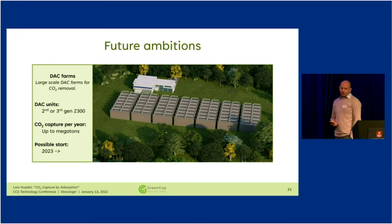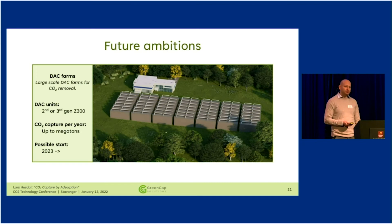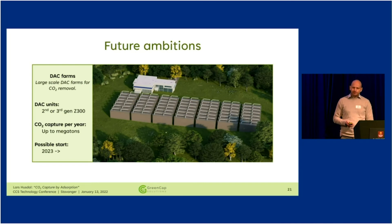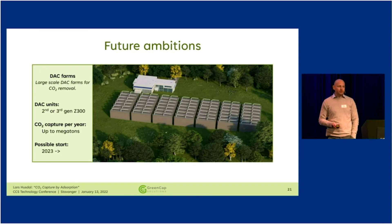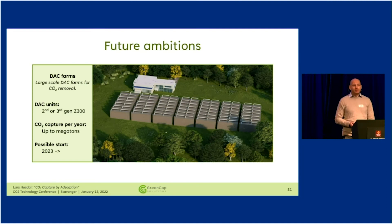Finally, we also have large future ambitions — to build large-scale DAC farms capable of capturing up to megatons of CO2 per year directly from the atmosphere. We want our technology to mature first, perhaps using a second or third generation of a larger DAC unit based on the Z300. We'll start small, build a couple of units, let the technology grow, and eventually scale up to the megatons needed if the planet is going to reach its climate goals. We have quite a lot of exciting projects going on at GreenCap, and we're really excited about the future.